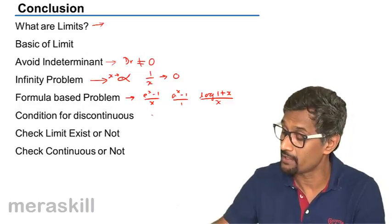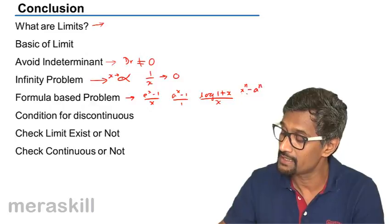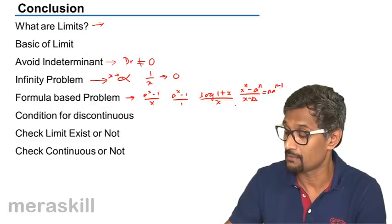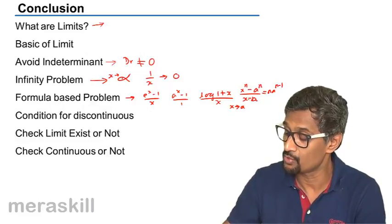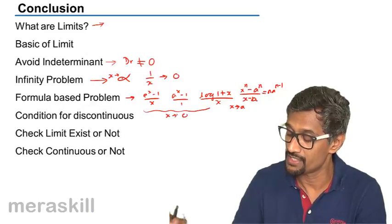And all these various formulae and of course a very important formula: x^n - a^n upon x - a is equal to n·a^(n-1). This is provided x is tending to a, while all these are concerned with x approaching 0.